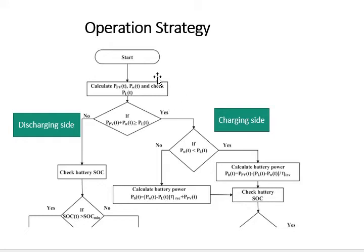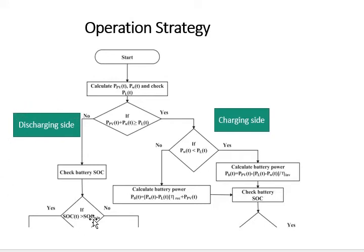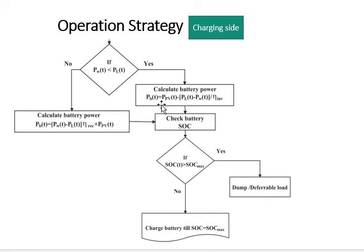The simplified steps of the operational strategy are as follows. First, PV power, wind power, and load profile are taken at time t. Then it checks whether the renewable energy generated is sufficient and surplus to meet the load demand. If yes, proceed to the charging side of the flowchart. If not sufficient, proceed to the discharging side. If power from wind turbines alone is enough to supply load demand, the remaining power from solar and wind can be fed to the battery bank, and the battery power in this case can be calculated accordingly.